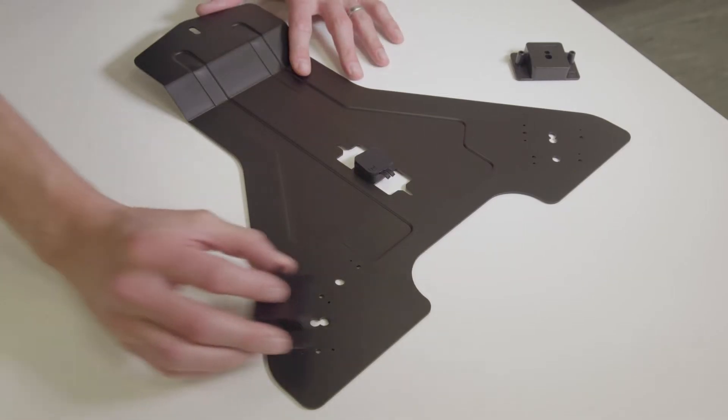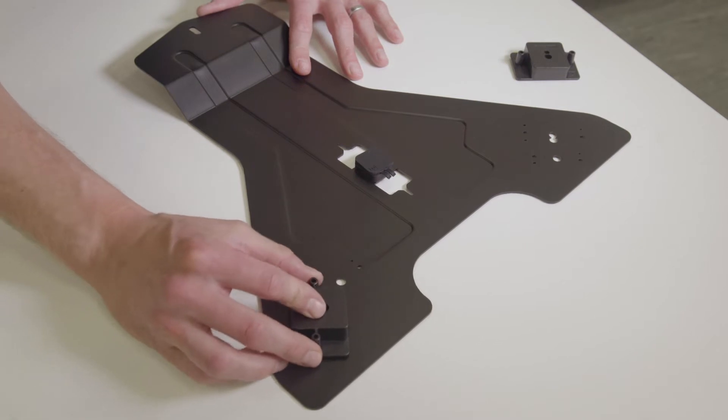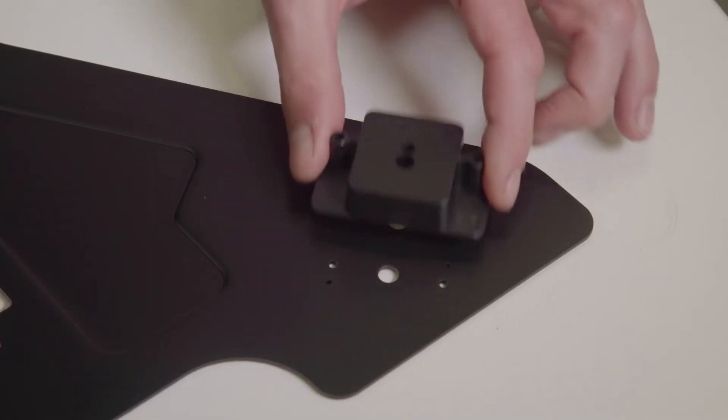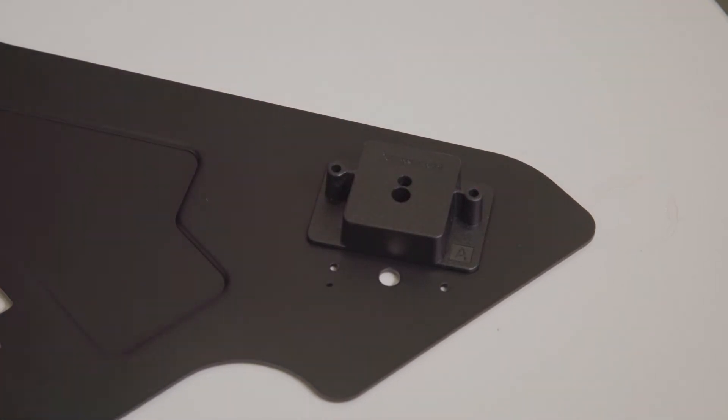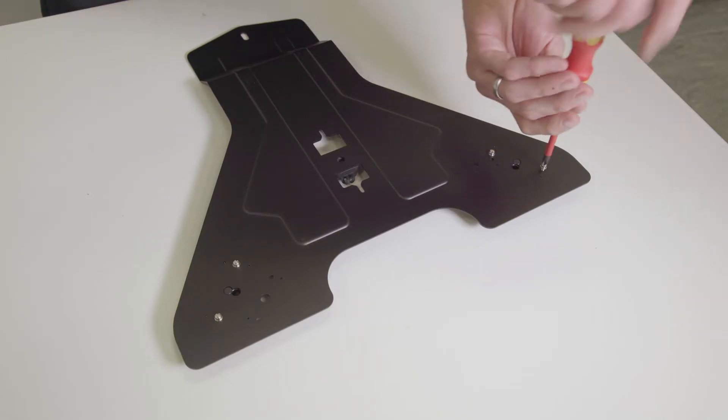Then on the lens bracket itself align two mounting blocks to the holes marked A. Next install the four M3 X8 screws to secure the mount blocks directly onto the lens bracket.